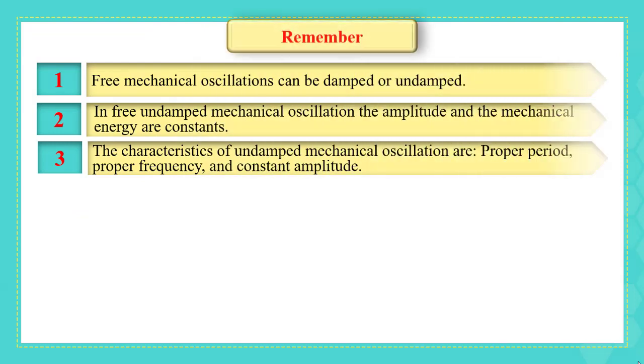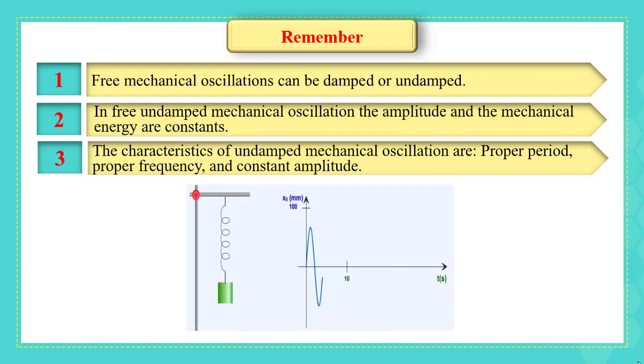Remember first that we have mentioned that free mechanical oscillations can be damped or undamped. In free undamped mechanical oscillations, the amplitude and mechanical energy are constants. The characteristics of the undamped mechanical oscillation are proper period, proper frequency, and constant amplitude.